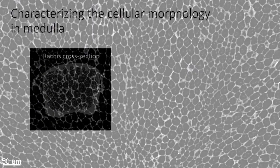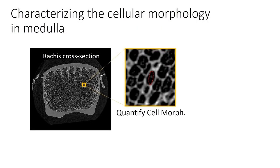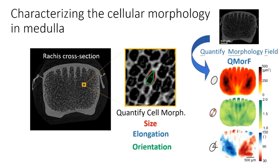We developed a novel analysis, Q-morph, to resolve the cellular organization in the medulla. After coarse-grained measurement of the cellular size, orientation, and elongation over the entire rachis cross-section, the spatial distribution of the cellular morphology in the medulla is quantitatively revealed.